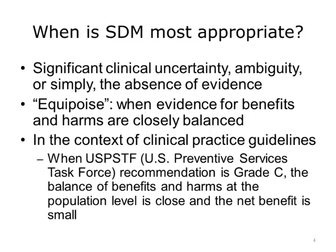Shared decision-making is best used for problems involving clinical uncertainty, ambiguity, or simply an absence of evidence. It is also appropriate in situations of equipoise, which is when evidence for benefits and harms is closely balanced. It can also provide the structure for providers to discuss clinical practice guidelines, particularly guidelines with U.S. Preventative Services Task Force Grade C recommendations — meaning that at the population level, the balance of benefits and harms is very close and the magnitude of net benefit is small. With transparency about evidence, patients, together with their providers, can make decisions about guidelines as they apply to individual risk profiles, preferences, and contexts.